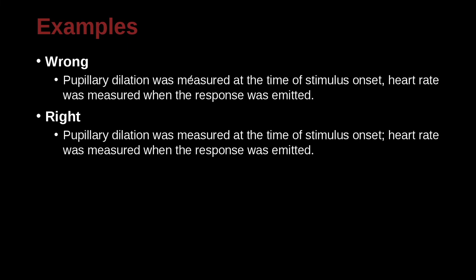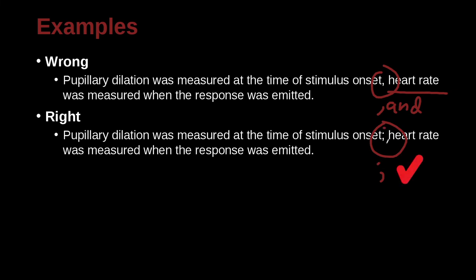'Pupillary dilation was measured at the time of stimulus onset. Heart rate was measured when the response was emitted.' Here we have a comma in one version and no comma in the other. 'Pupillary dilation was measured at the time of stimulus onset' — that is independent. 'Heart rate was measured when the response was emitted' — that also seems very independent, with its own subject and verb. So we could use a comma and a conjunction, or we can just use a semicolon, which is what is done in the correct version.